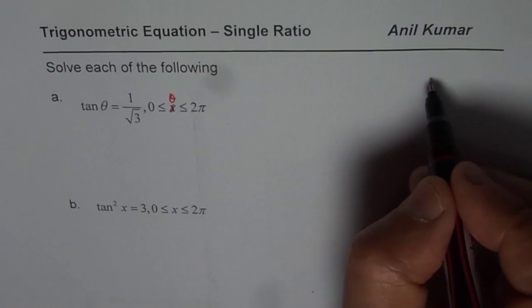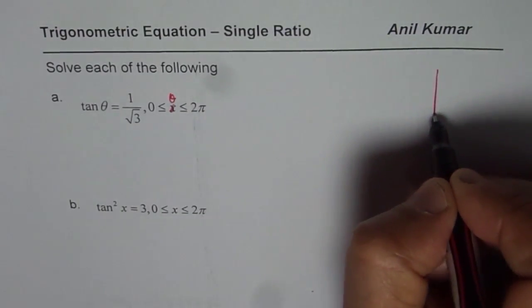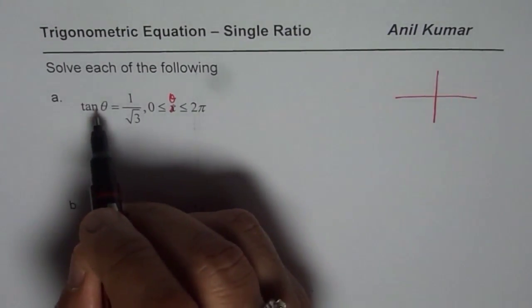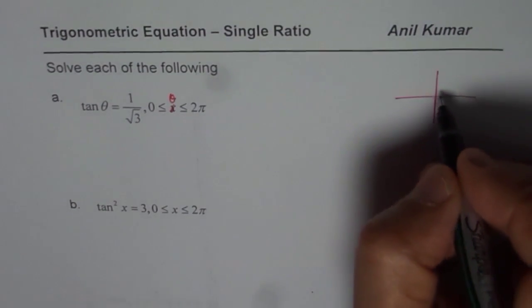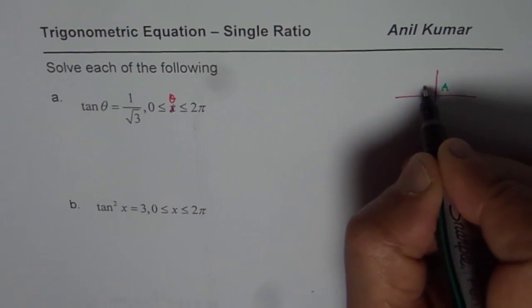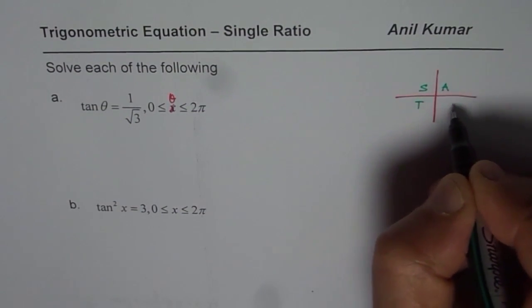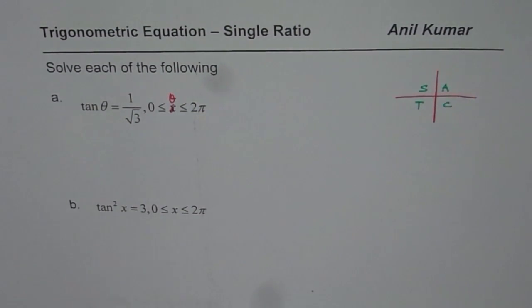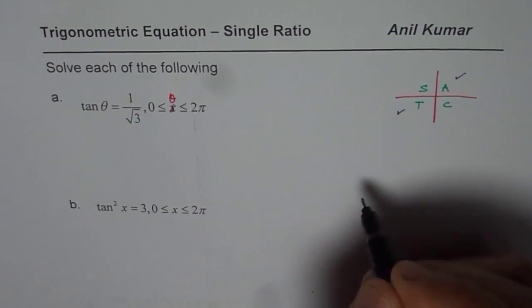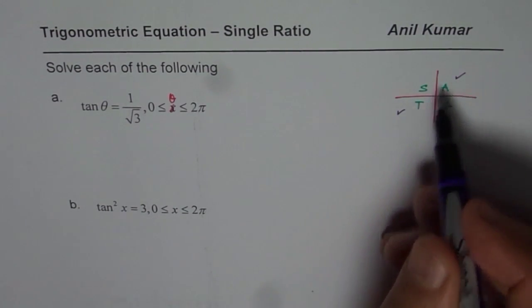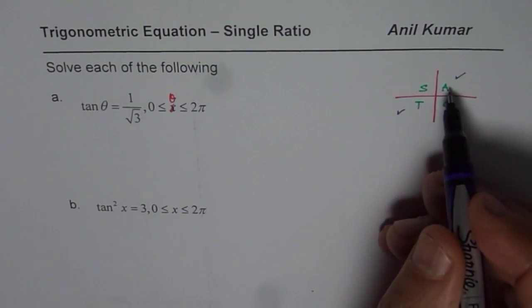The first step is to find the quadrant in which the solution may lie. Since tan is positive, which quadrant will it be positive? You know all are positive in quadrant 1, sine in 2, tan in 3 and cosine in 4. So we are expecting a positive answer in quadrant 1 and in 3.